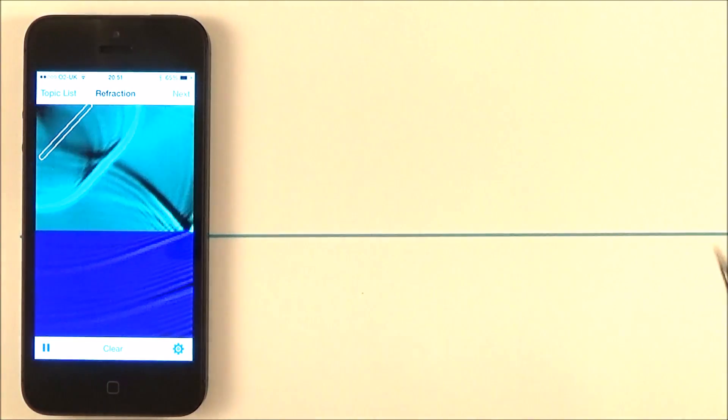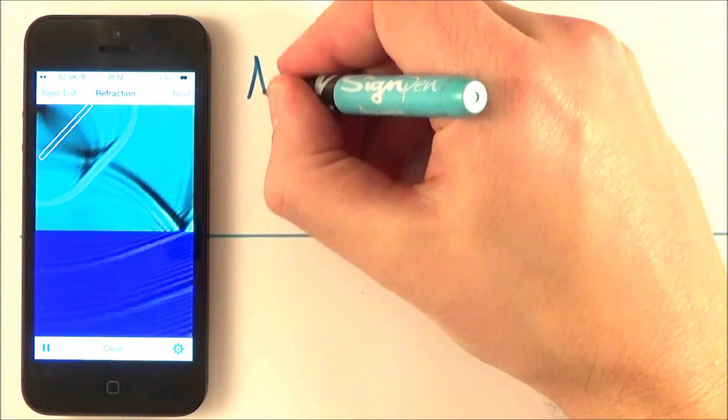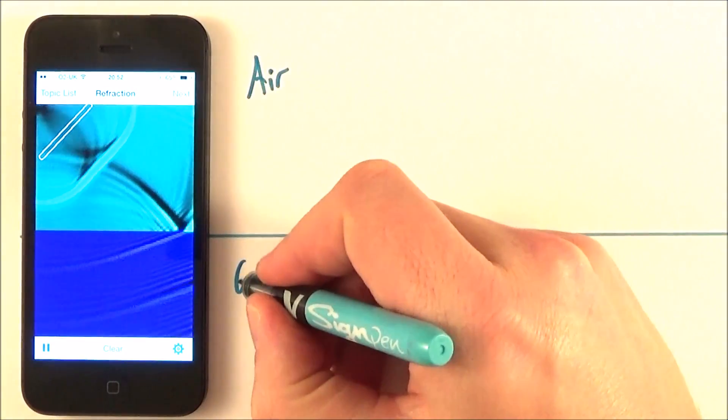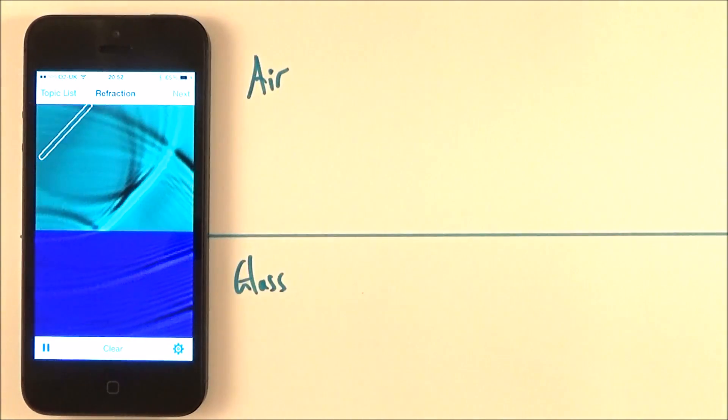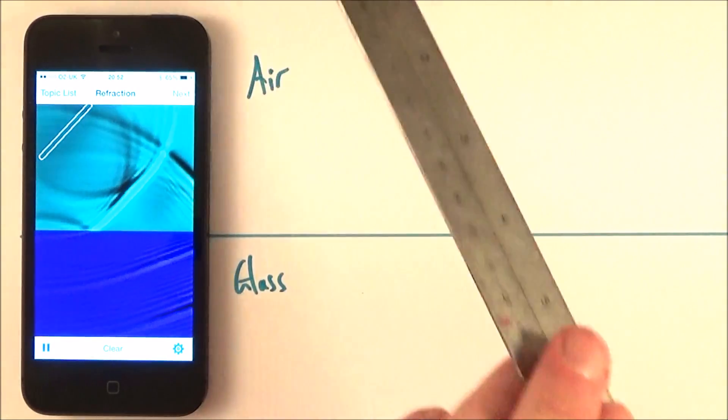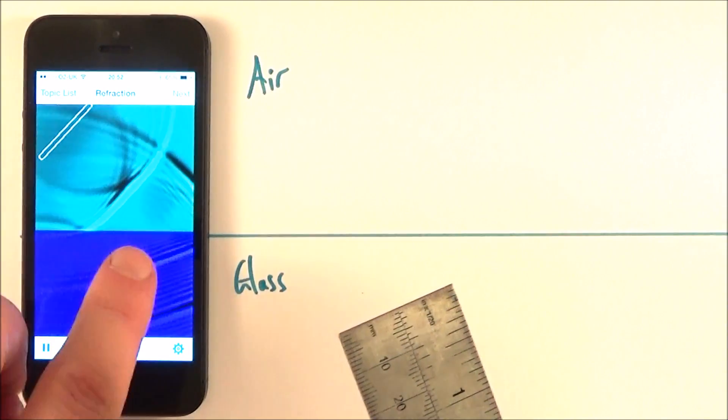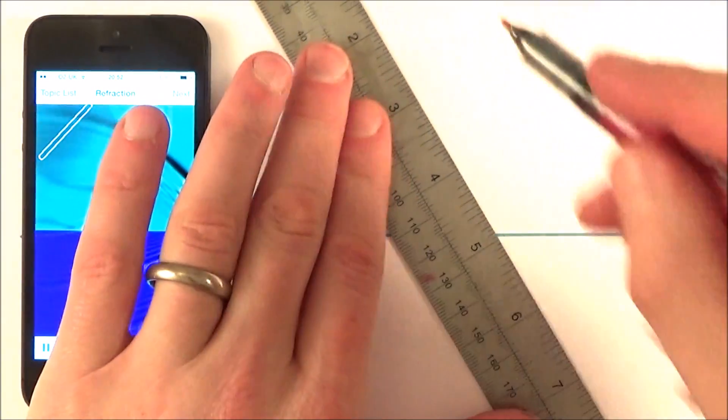Now perhaps this might be when you have a wave maybe moving from air into glass, perhaps, or it could be any kind of medium. It could even be a vacuum into the air. And if we think about a ray of light, what I have here are the wave fronts, but what I'm going to do is the ray to actually show the direction of that.